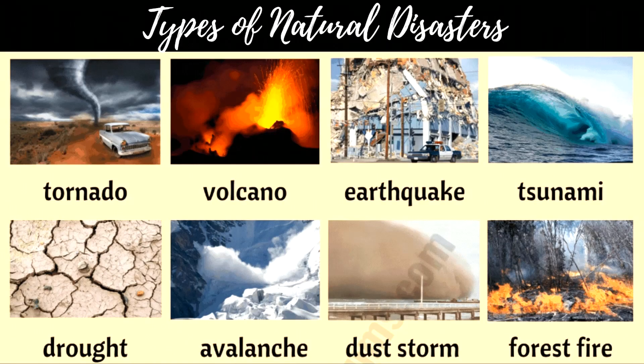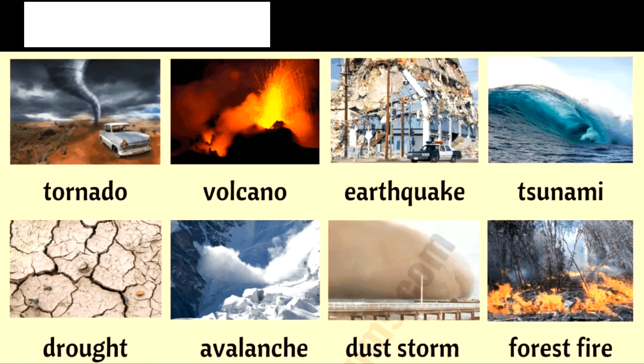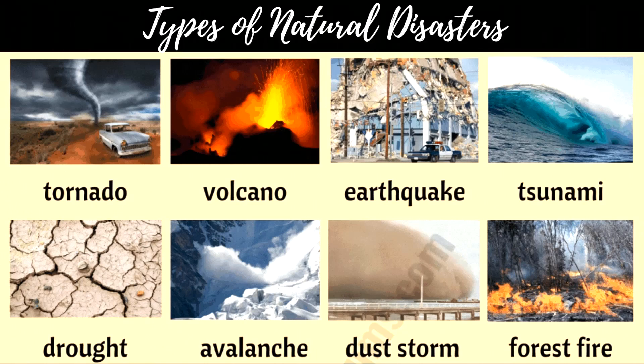Natural disasters are events that result from natural processes such as tornado, volcano, earthquake, tsunami, drought, avalanche, dust storm, forest fire, etc.